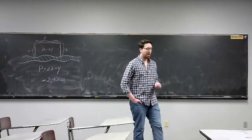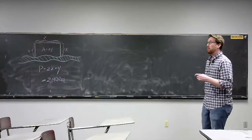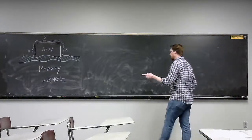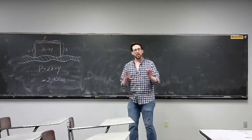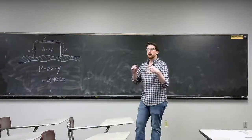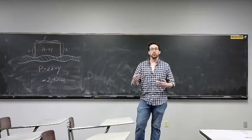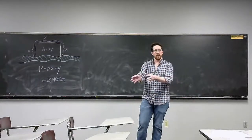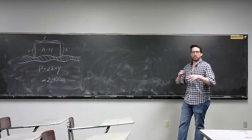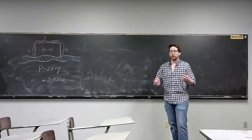Welcome to lecture 19, which covers section 3.7. Before getting into the first example, I wanted to explain a little bit about what this section is about. It's about the idea of optimization — how can we take an idea and find the best or worst solution? In other words, we're applying calculus to figure out the biggest or smallest possible answers.